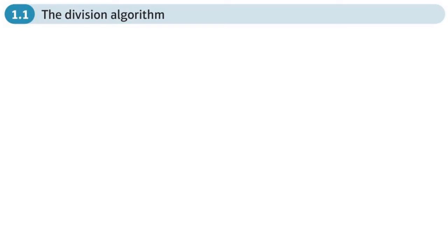This is the first section of chapter one in FP2 on number theory, and we're going to be looking at the division algorithm. This chapter concerns whole numbers, and we have special symbols to show we're talking about certain types of numbers — integers, complex numbers, real numbers, imaginary numbers. For integers, we use this special-looking Z, called Zählen, which is German for number.